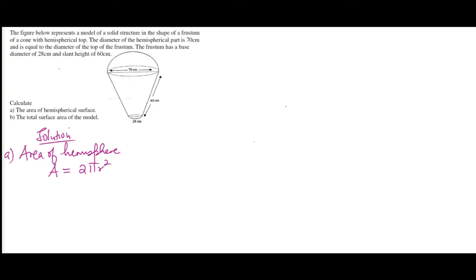We substitute the values. We use π = 22/7. So: 2 × (22/7) × 35 × 35. When you multiply these out, you obtain 7700 cm².